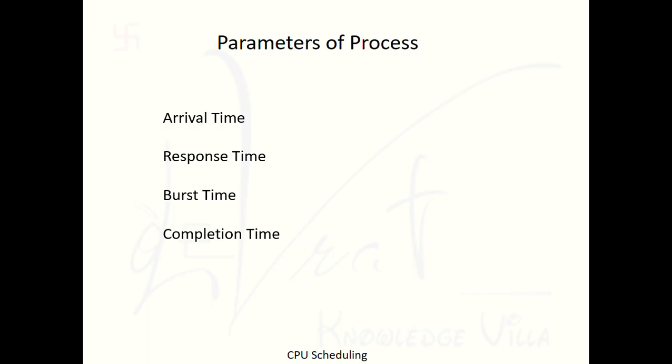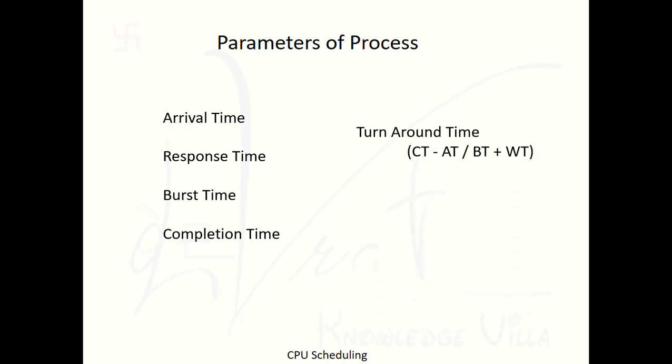Completion Time is when a process finishes its entire execution. Like reaching Baroda at 8 PM is your arrival time at the destination. If a process starts execution at 7 AM and completes at 7:30 AM, then 7:30 AM is the completion time. The moment a process finishes all its execution is known as the completion time.